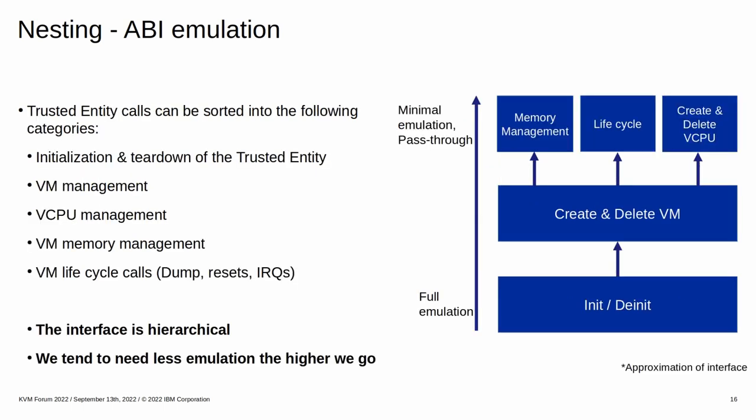We can sort the API calls into listed categories. The interface is hierarchical — initialization has to occur before the creation of a secure VM, which has to occur before the creation of a vCPU, and so on. Generally, we need less emulation the higher we go in the hierarchy.